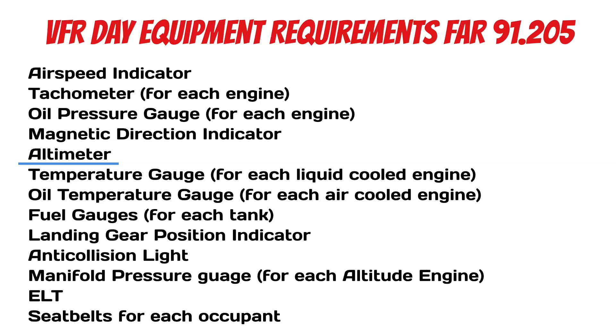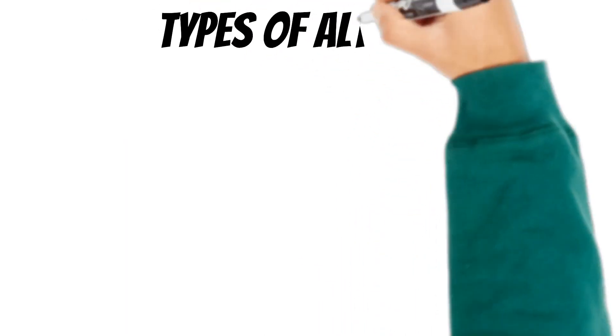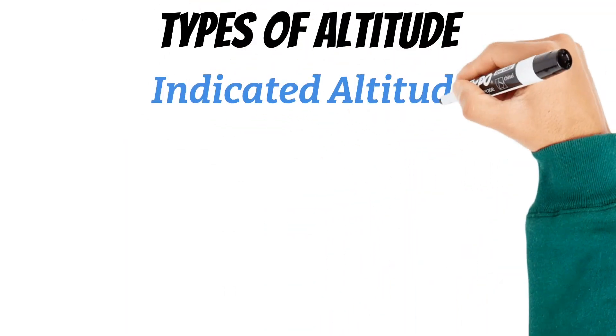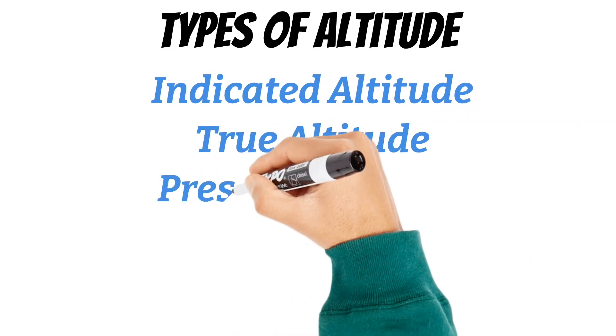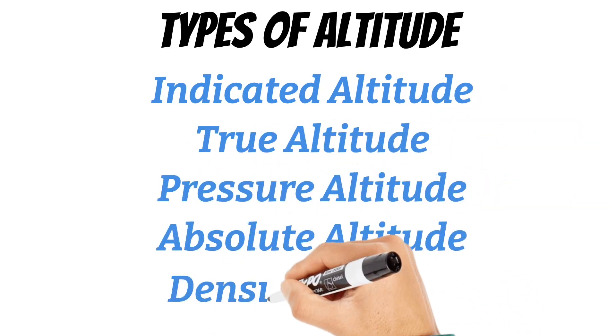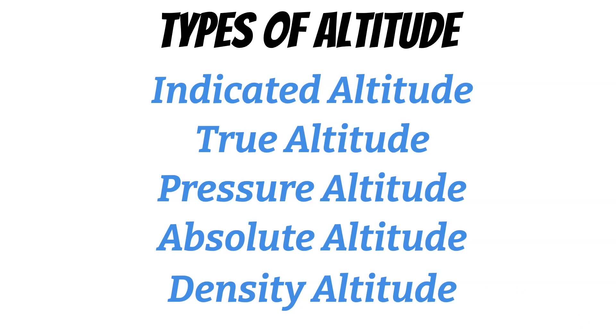But before we can talk about how to use it, there's a couple things we need to talk about first. Let's start by talking about the different types of altitude. We have indicated altitude, true altitude, pressure altitude, absolute altitude, and density altitude.